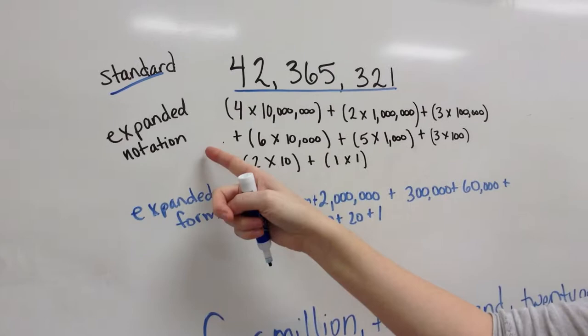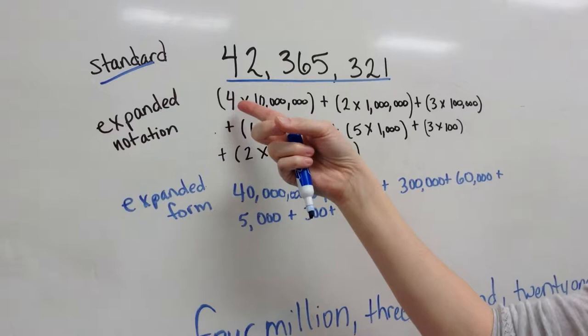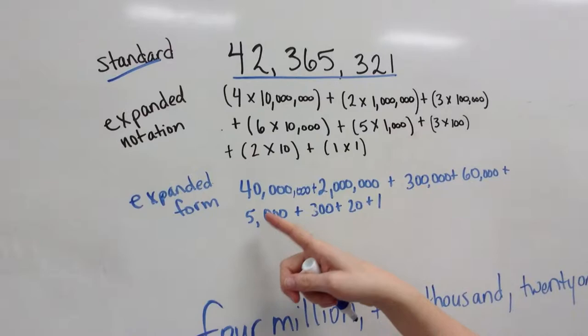Expanded notation shows the value of each place value times the digit that would be in it, so this represents forty million.